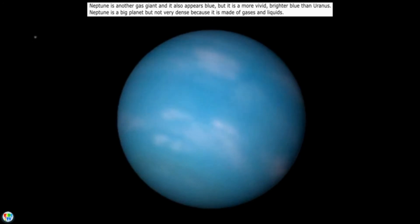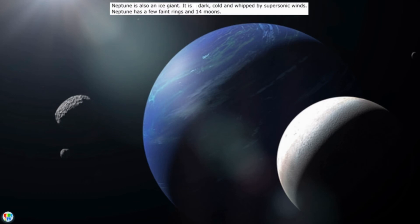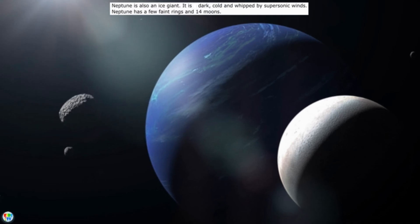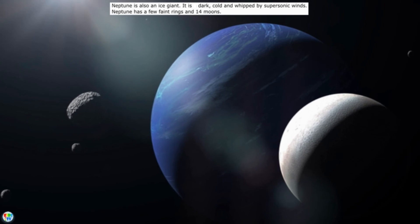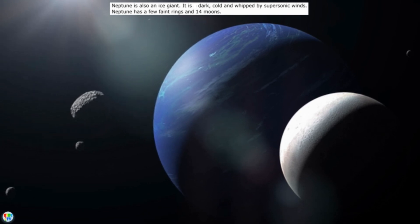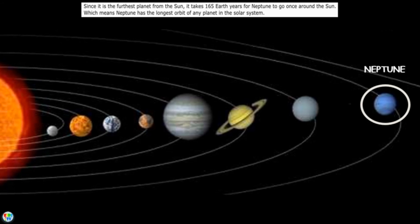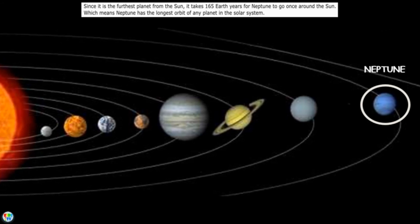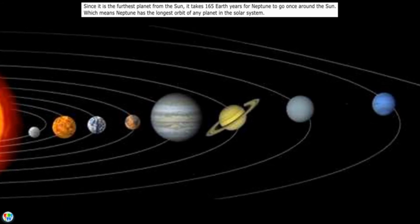Neptune, the eighth planet from the Sun. Neptune is another gas giant and it also appears blue, but it is a more vivid brighter blue than Uranus. Neptune is a big planet but not very dense because it is made of gases and liquids. Neptune is also an ice giant. It is a dark, cold planet whipped by supersonic winds. Neptune has a few faint rings and 14 moons. Since it is the furthest planet from the Sun, it takes 165 Earth years for Neptune to go once around the Sun, which means Neptune has the longest orbit of any planet in the solar system.